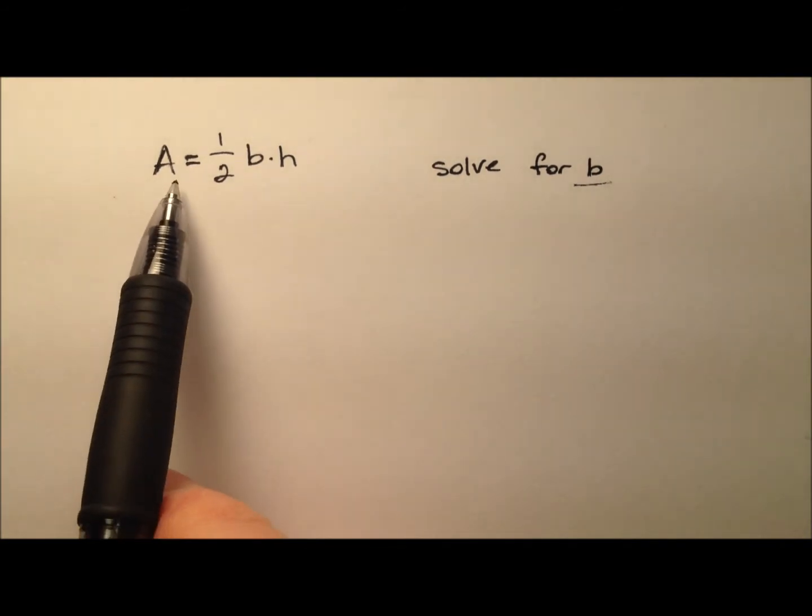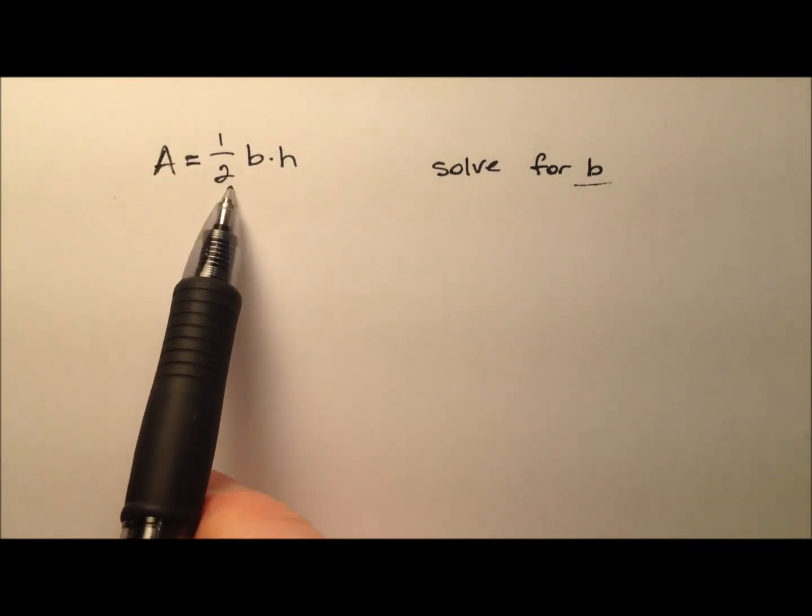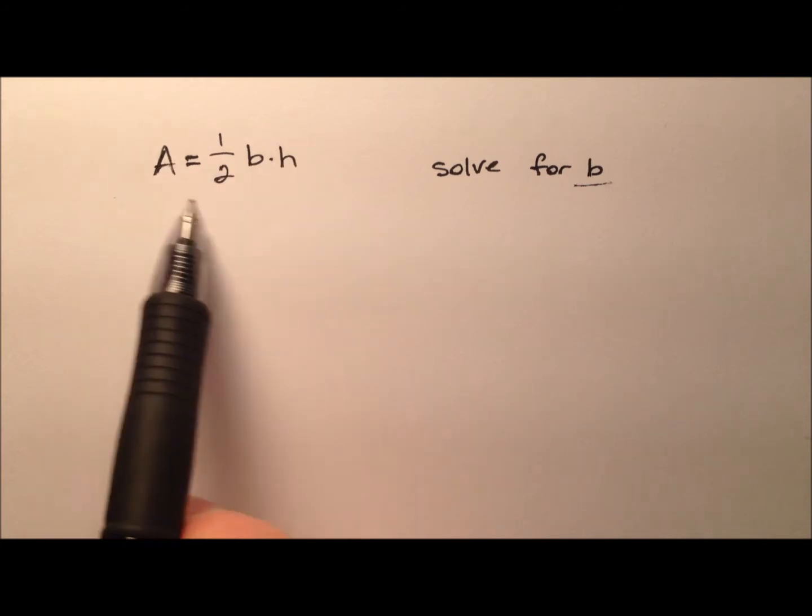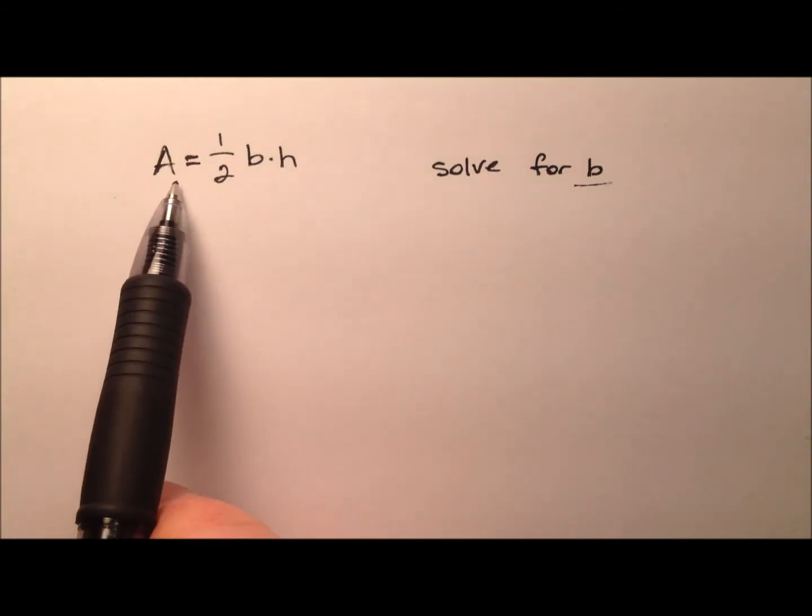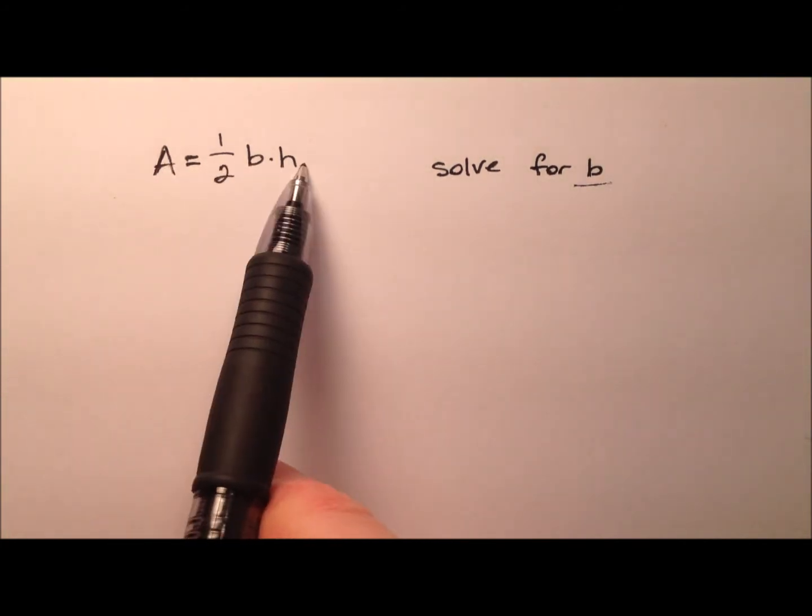In this example, we're given the equation A = (1/2)bh, and you may recognize this as the formula for the area of a triangle.